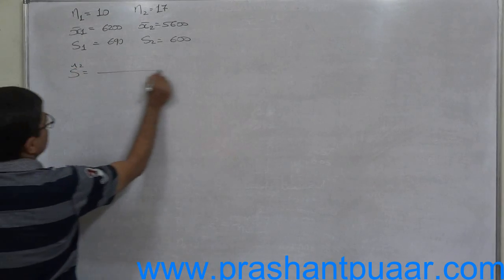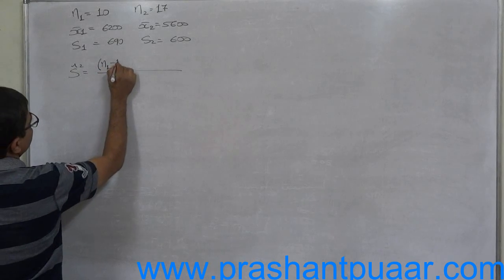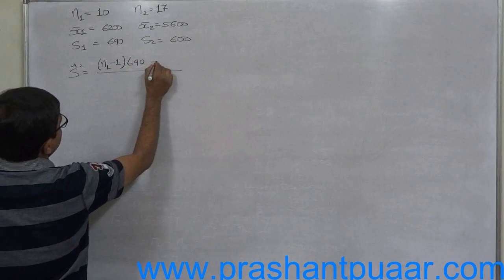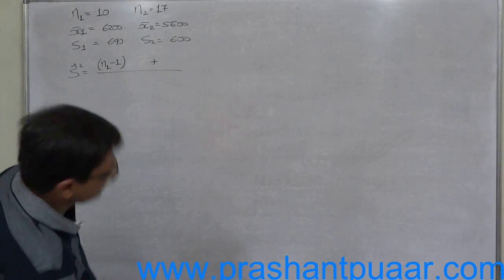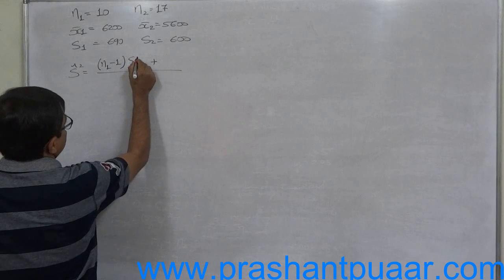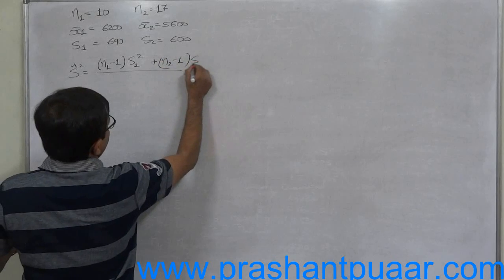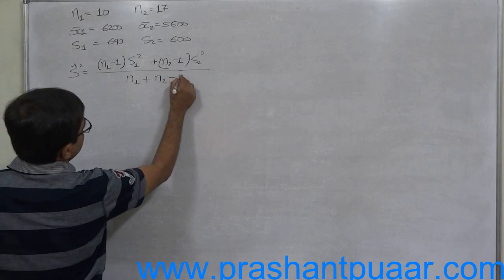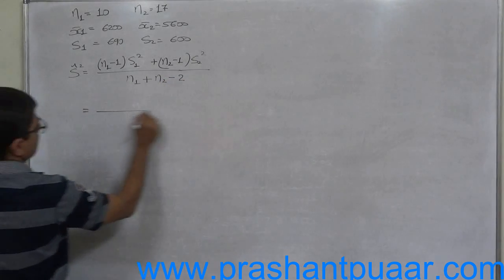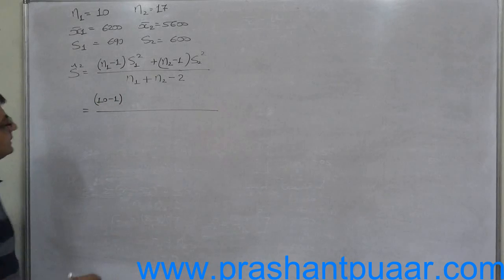In this case we will have to use the formula: n1 minus 1 into S1 square plus n2 minus 1 into S2 square upon n1 plus n2 minus 2. 10 minus 1 into S1 square, square of 690.